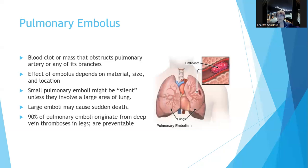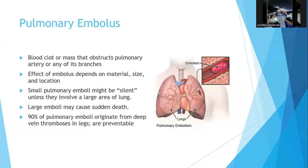Ninety percent of pulmonary emboli originate from deep vein thromboses in the legs, and they are preventable. In physical therapy, when working with post-surgical patients, we need to be aware that someone could have a deep vein thrombosis that could potentially become a pulmonary embolus. They're preventable and screenable. For example, we once had a post-surgical patient whose only symptoms were slightly elevated blood pressure and his wife saying something was 'just not right.' We sent him to the doctor, they screened him, found a pulmonary embolus, and treated it with anti-clotting drugs.